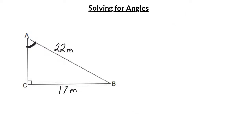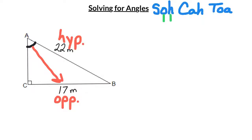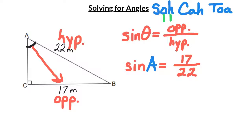To solve for an unknown angle, you start off the same way — you label your sides. The hypotenuse is my longest side, directly across from the right angle, and directly across from my reference angle is my opposite side. So for this triangle, I know the opposite and the hypotenuse. So if I look at my acronym SOH CAH TOA, I want the one that uses both opposite and hypotenuse — it ends up being the sine ratio. The sine of the reference angle is equal to the opposite divided by the hypotenuse. My reference angle is A, my opposite is 17, and my hypotenuse is 22.